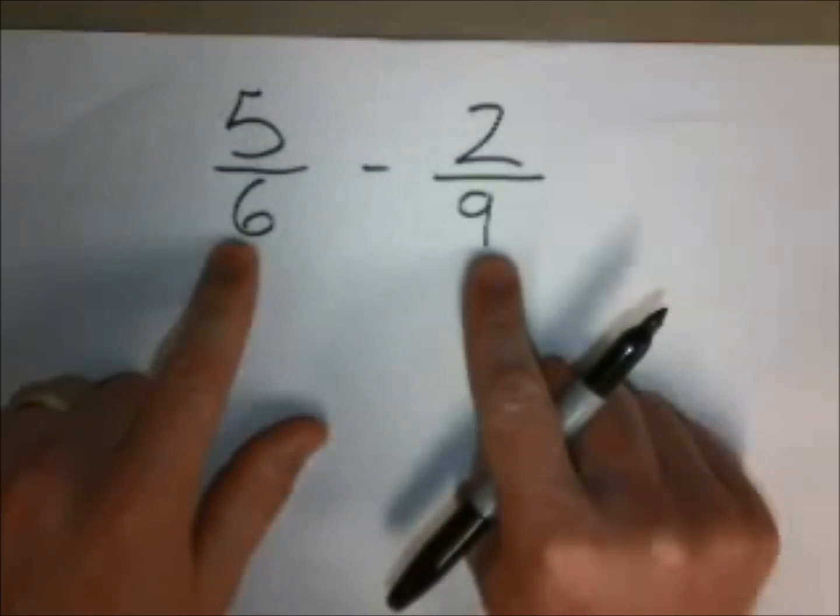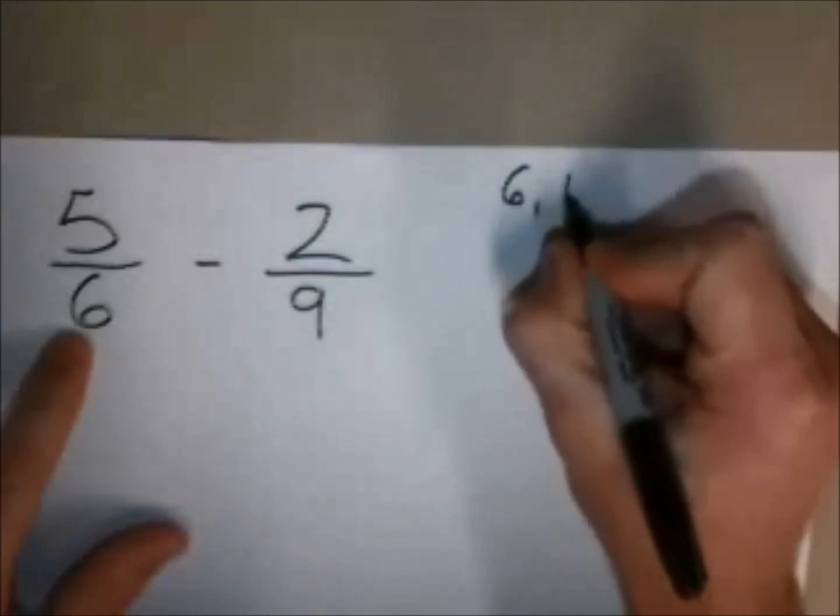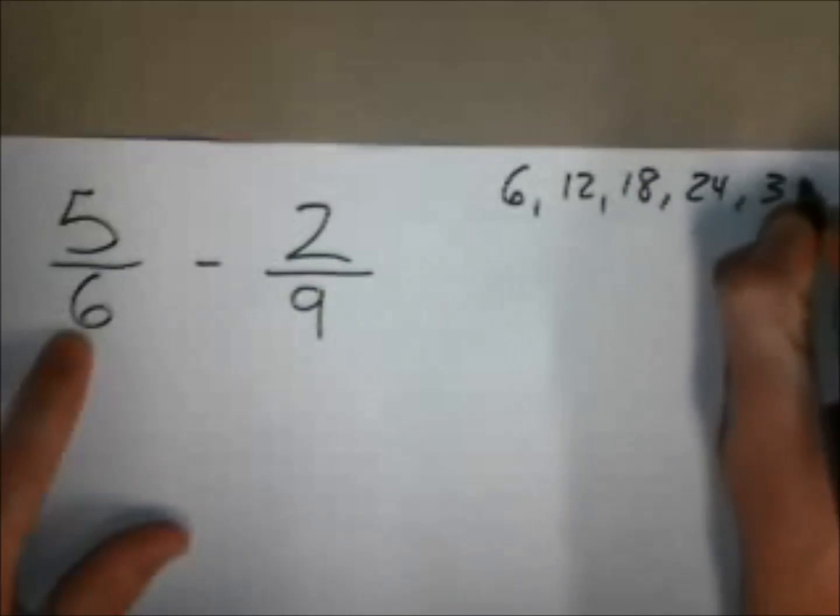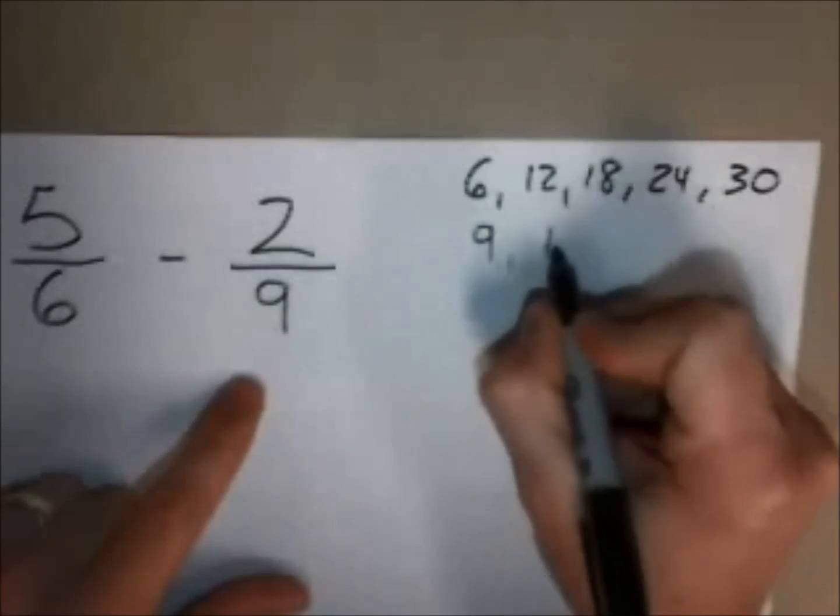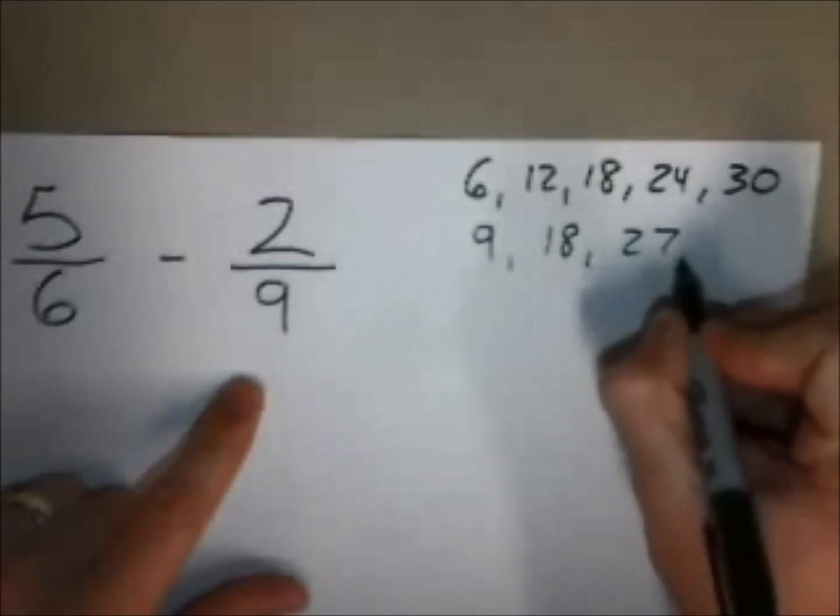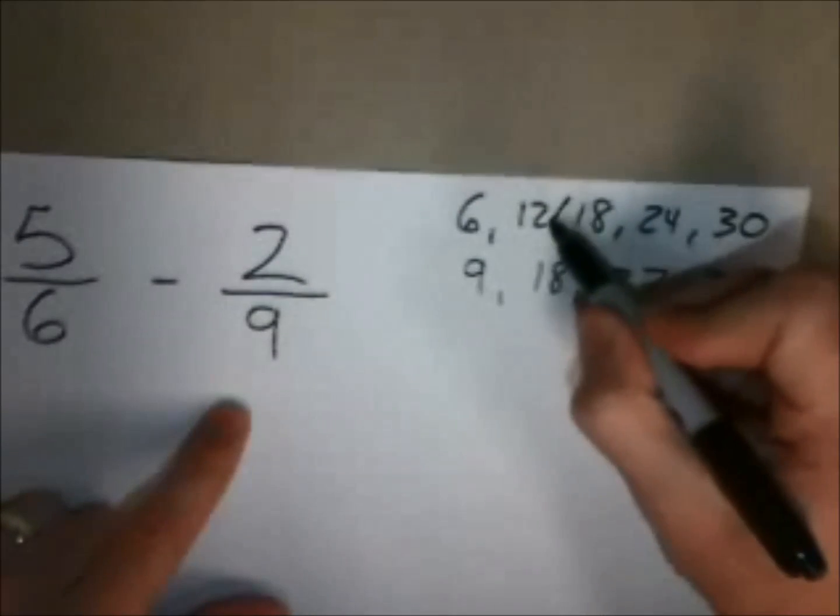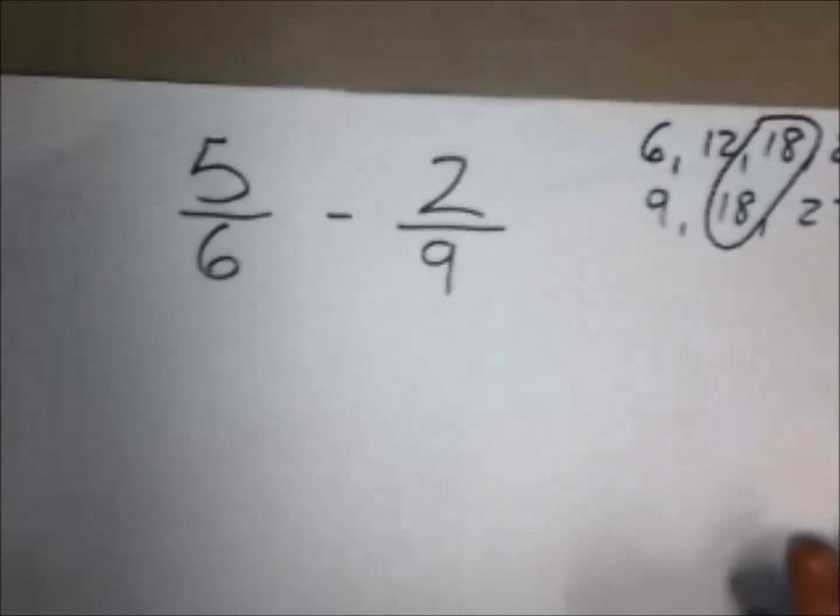The easy way involves showing your factors. Right here in my corner I'm going to list my sixes: I got 6, 12, 18, 24, and 30. Next up I have my nines: I got my 9, 18, 27, 36. Immediately I found out that both of these have a common factor of 18.